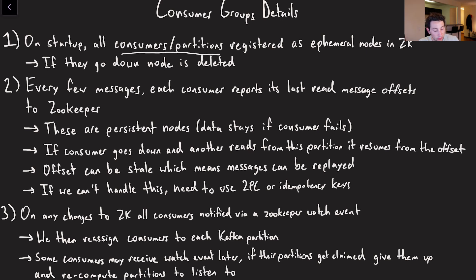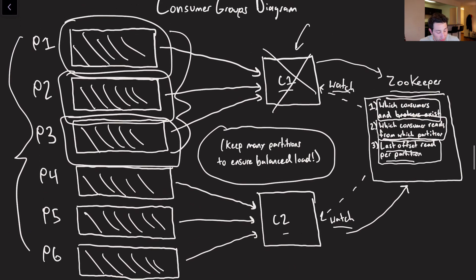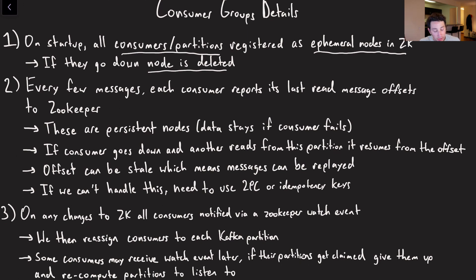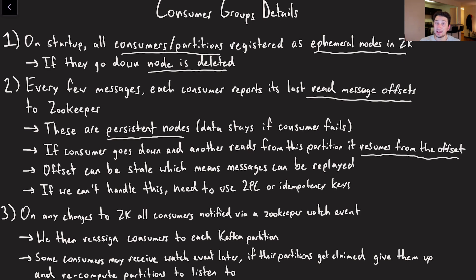Basically, every single time that we start up, all consumers in Kafka partitions are going to register themselves as ephemeral nodes in Zookeeper. An ephemeral node just means that if for some reason the consumer or the broker containing the partition goes down, that node is deleted, and because of the watch we registered, everyone will be notified that that process went down. Every few messages that we read from a given Kafka partition, the consumer is going to report the last read message offset. This ensures that if someone else has to take its place, we can start re-reading from that offset. Note that these offsets are persistent nodes — they're not tied to one particular consumer, so they stick around. If we are going to be replaying messages, ideally we don't want to use two-phase commit. It would be much better to derive something like an idempotency key from every single message and then use that to deduplicate work.